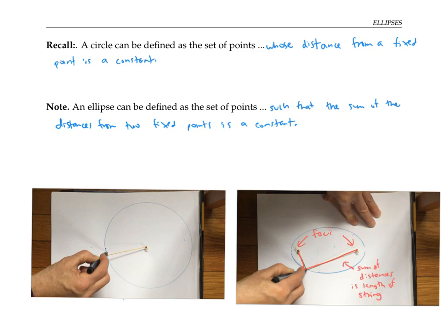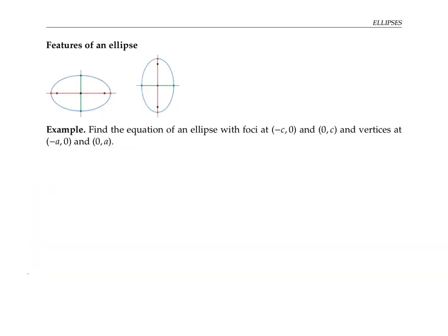Let's examine the features of an ellipse in more detail. In these pictures, the two black dots are the focuses or foci. The red line segment that cuts through the middle of the ellipse in the long direction and passes through the foci is called the major axis. The line segment that cuts through the middle of the ellipse in the shorter direction is called the minor axis. The two points at the tips of the ellipse where the major axis touches the ellipse are called the vertices.